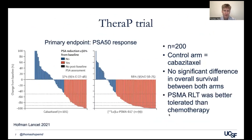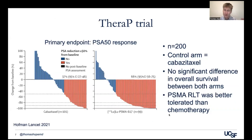The other trial I like to talk about is the TheraP trial — an academic study out of the Peter McCallum Institute in Australia. The VISION trial was company-sponsored to gain approval, whereas TheraP was academic. This was a randomized one-to-one 200-patient study comparing lutetium PSMA-617 to cabazitaxel — unlike the VISION trial, this had an active comparator arm.